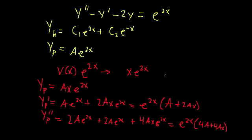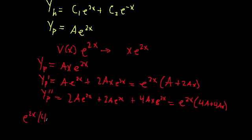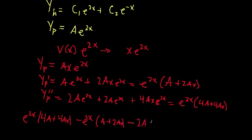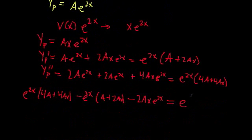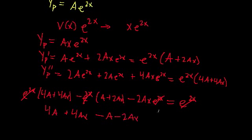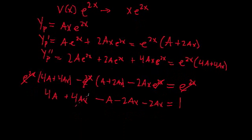So let's plug all of these into this differential equation. We get e^{2x}·(4a + 4ax) minus e^{2x}·(a + 2ax) minus 2·a·x·e^{2x}, and all of that should equal e^{2x}. Dividing through by e^{2x}, we get 4a + 4ax − a − 2ax − 2ax = 1. The 4ax terms cancel with the two −2ax terms, and we're left with 3a = 1, or a = 1/3.